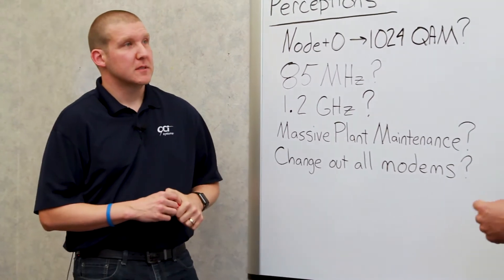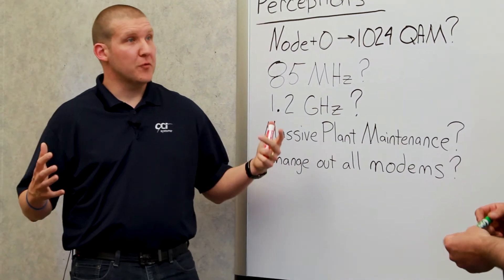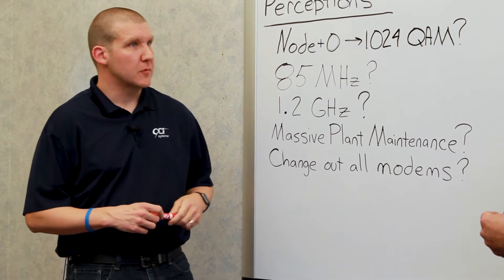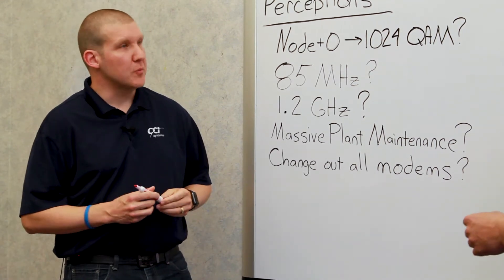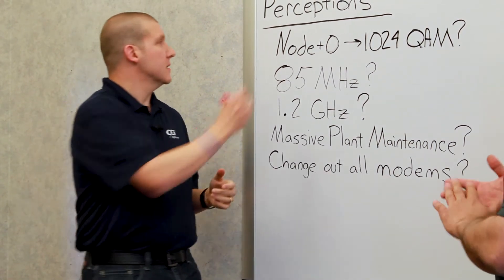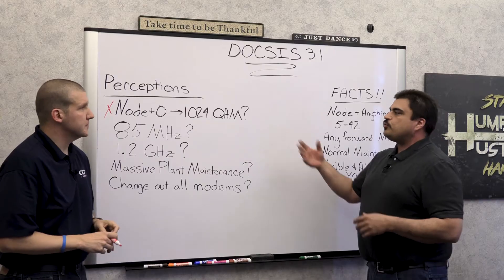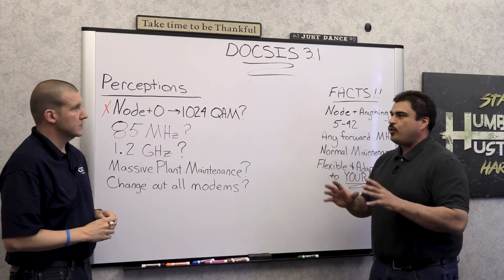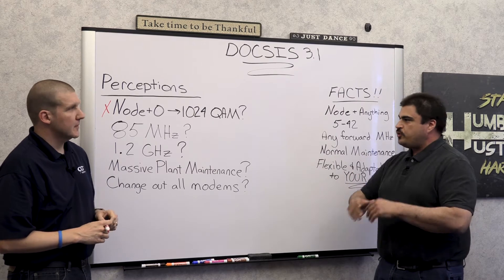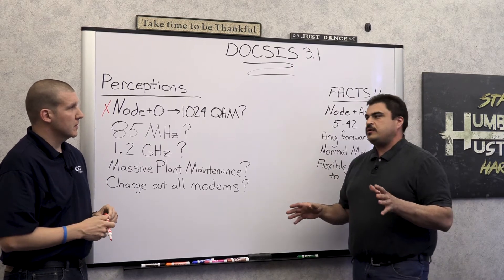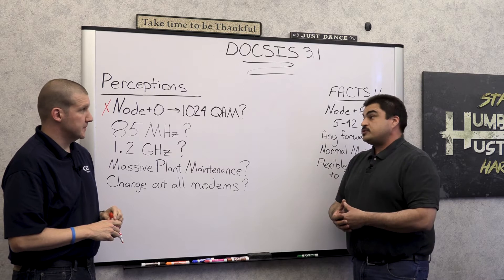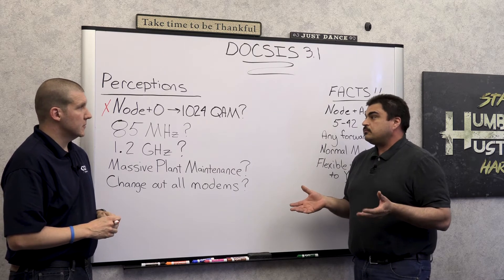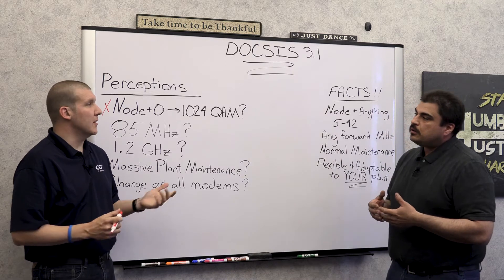The first myth: the only way to get 1024 QAM and more bandwidth was to do Node Plus Zero. That came out and people really thought it had to be done - completely false. Node Plus Zero means cascade zero, no actives in the field, just a node and passives, nothing beyond that. Lots of expense - an extremely high cost with little ROI. That's a hard ROI to approve.